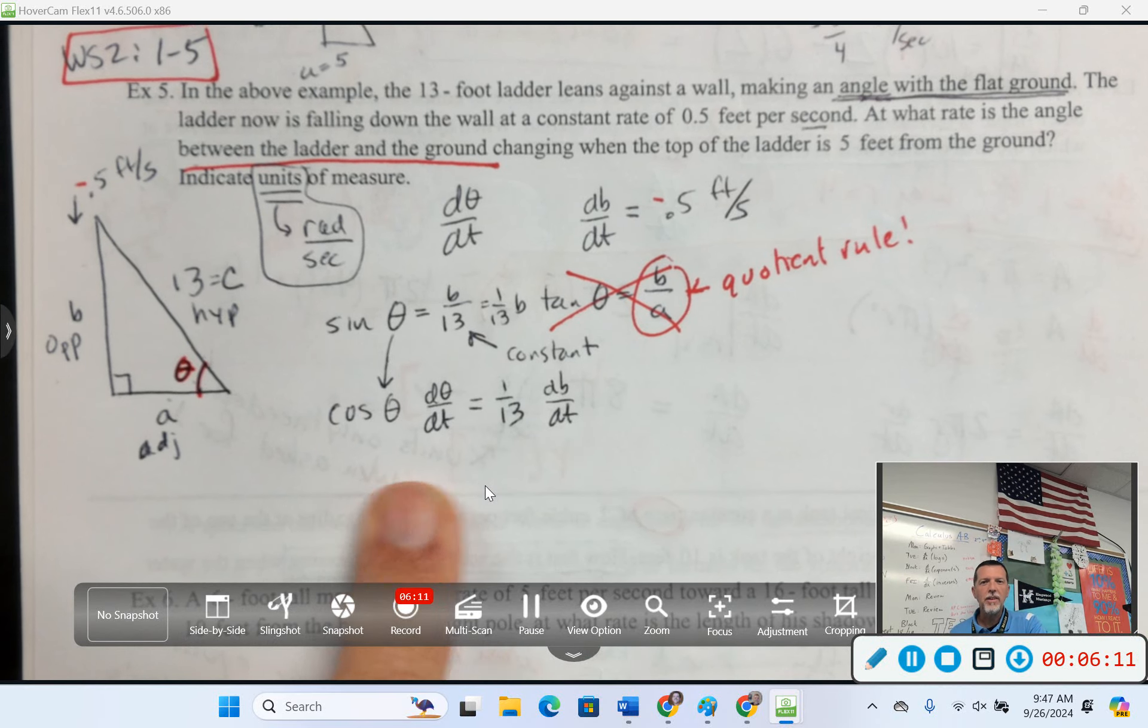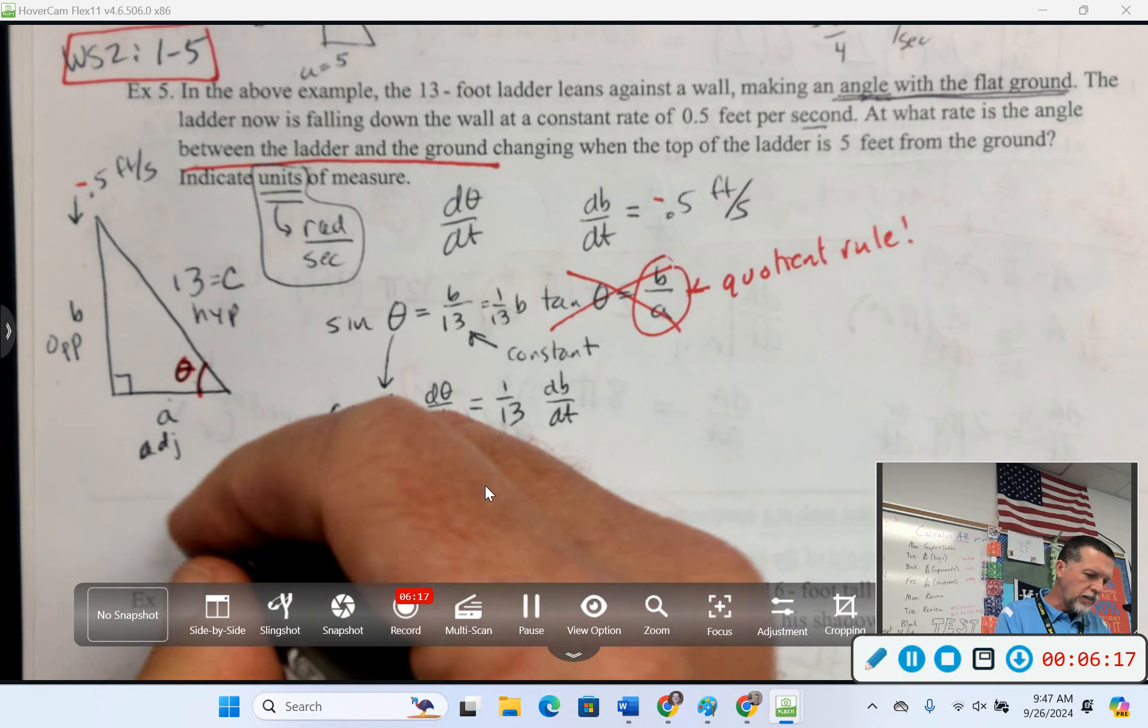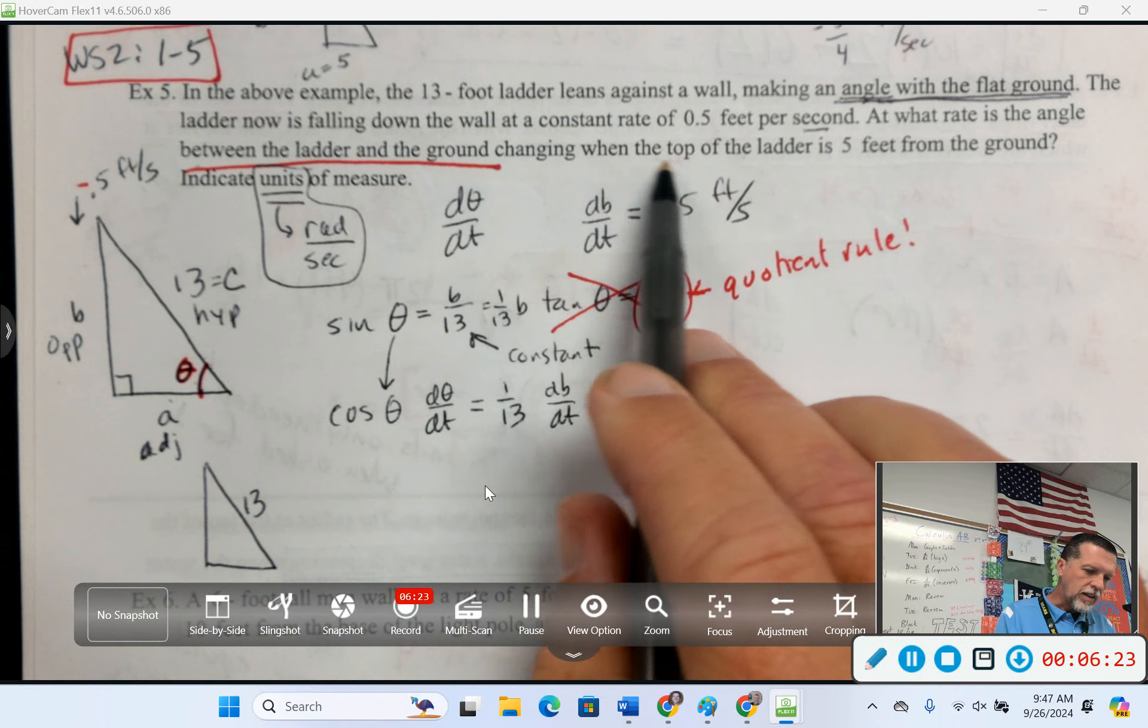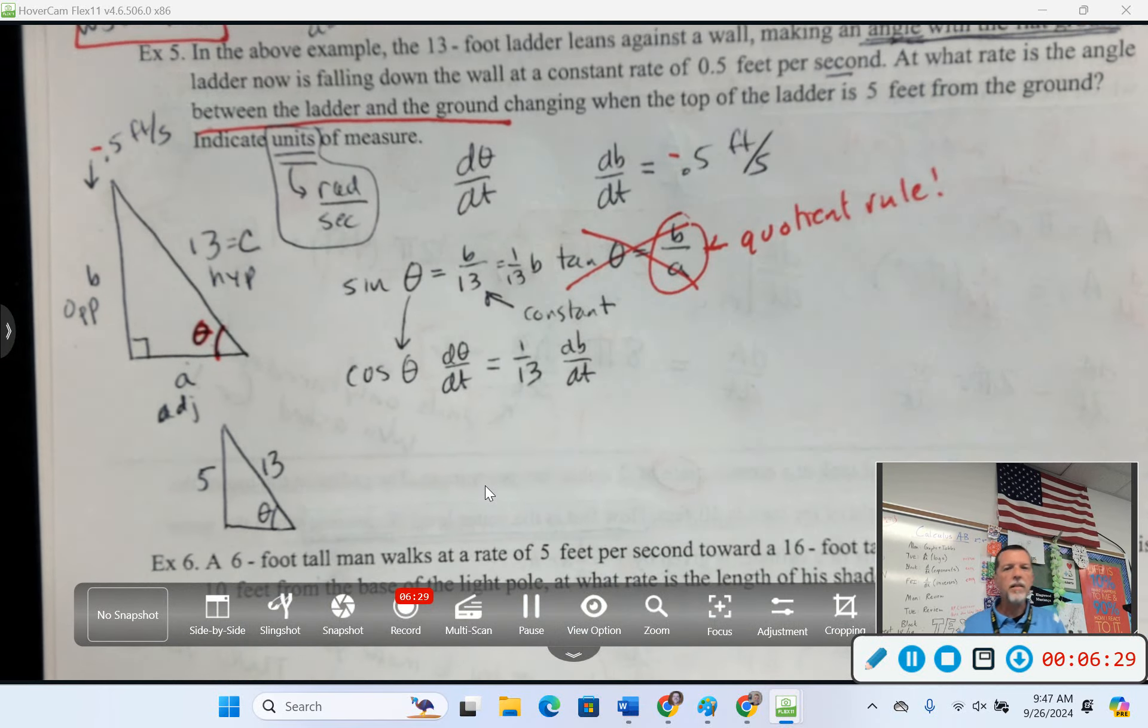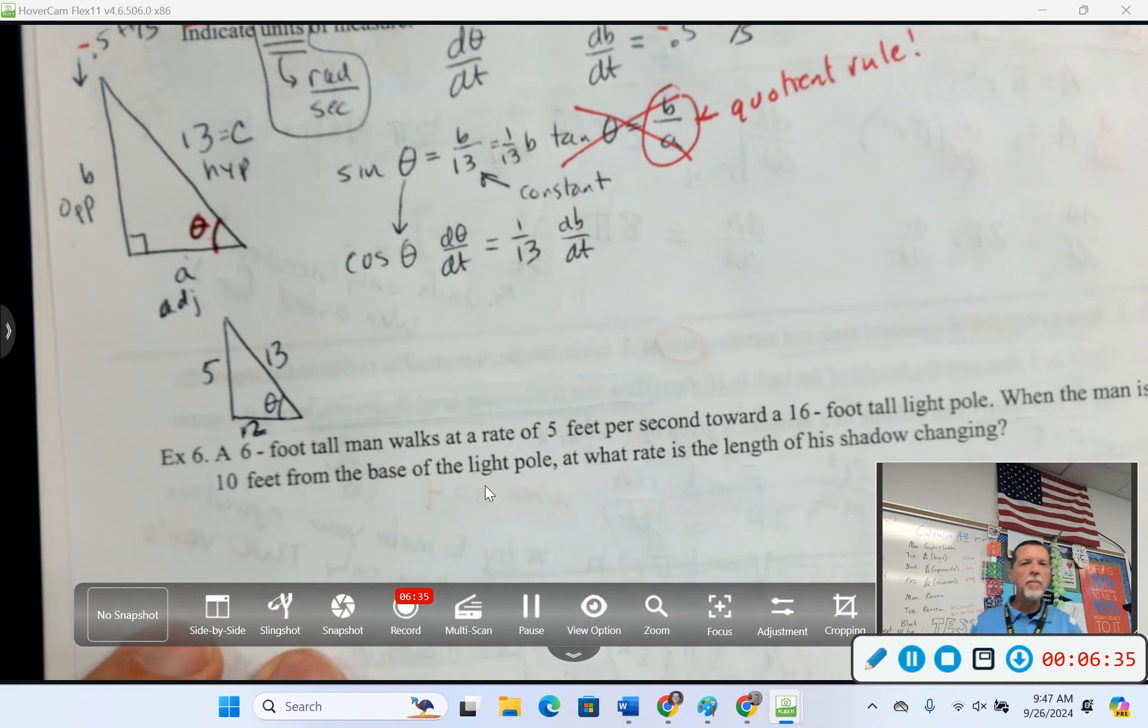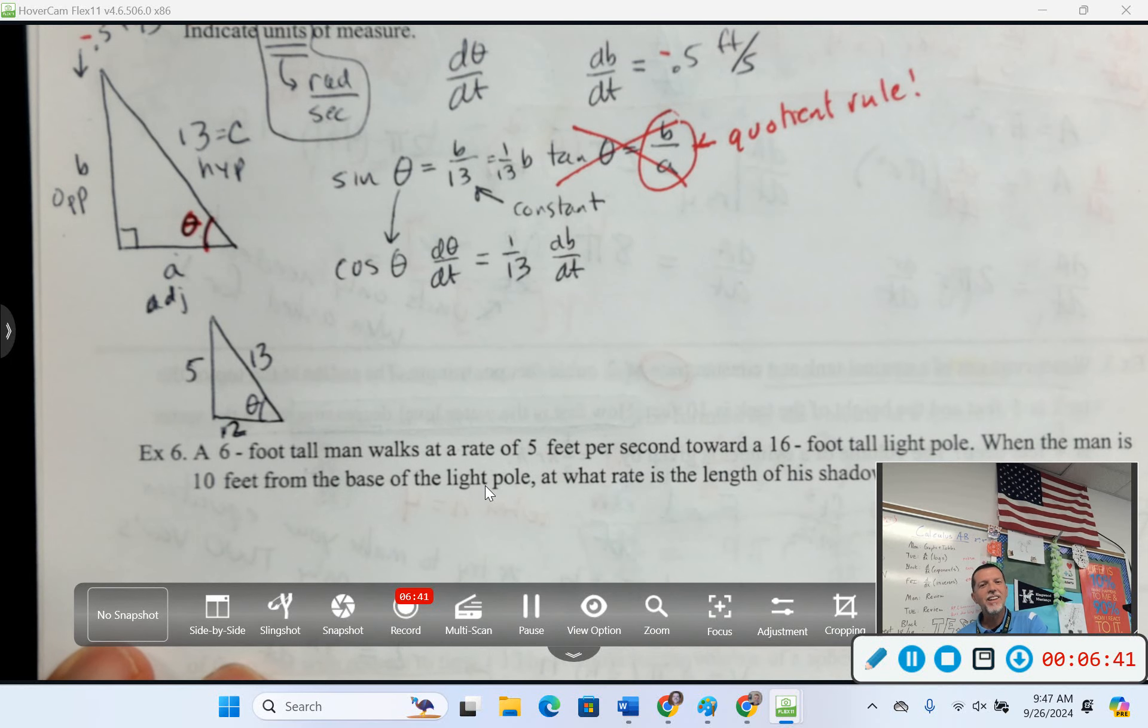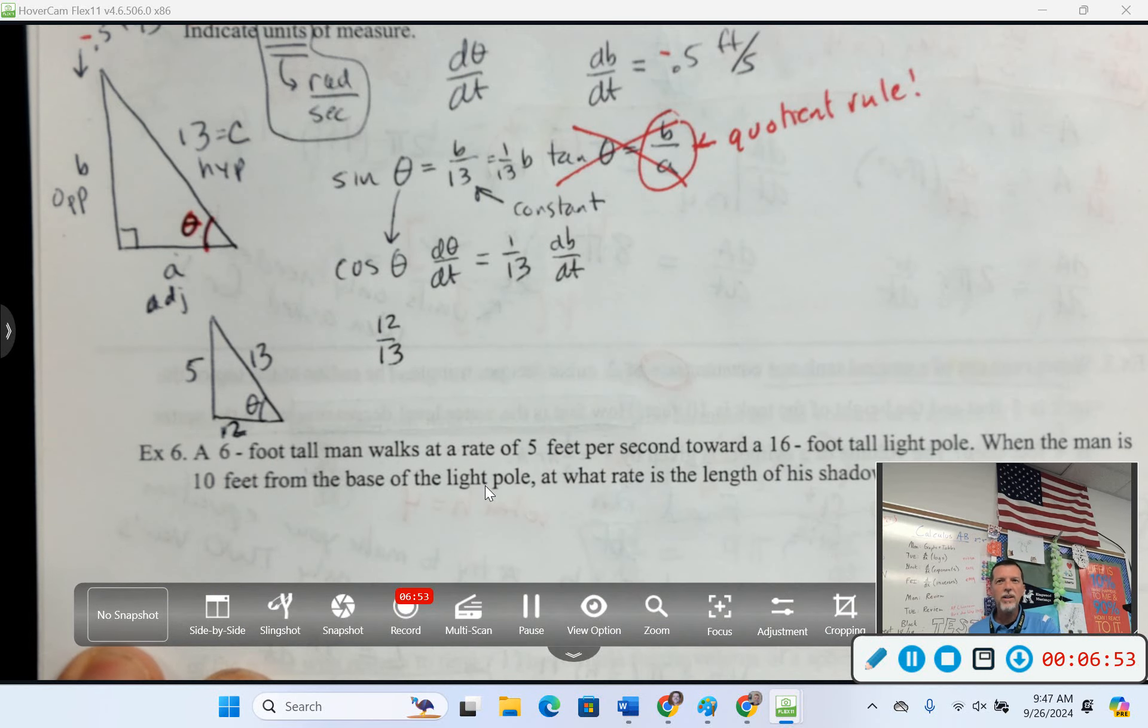Okay, let's see if I have all my pieces here. dB/dt we know. 1/13 is fine. dθ/dt is what we're looking for. Cosine of theta, I don't know yet, but it did say that the top of the ladder is 5 feet from the ground. The top of the ladder is 5 feet from the ground. So, this is another 5, 12, 13 triangle. How do you find the cosine of theta? This is back to geometry cosine. SOHCAHTOA. What ratio is cosine? Adjacent over hypotenuse.